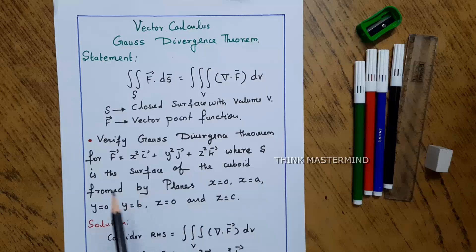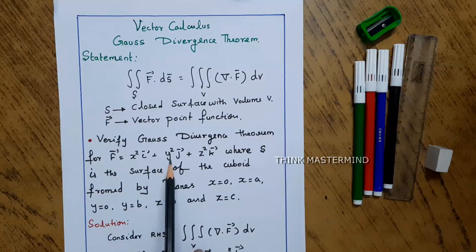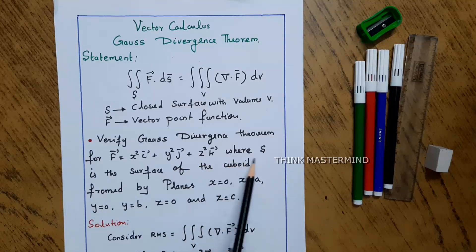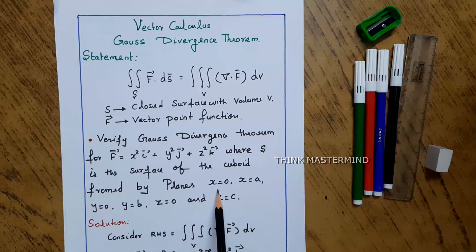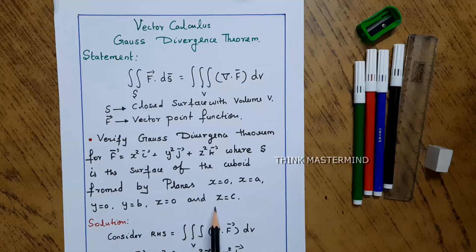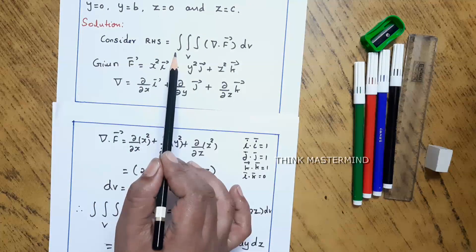Problem: Verify Gauss Divergence Theorem for vector f = x² i + y² j + z² k, where S is the surface of the cuboid formed by the planes x = 0, x = a, y = 0, y = b, z = 0 and z = c.